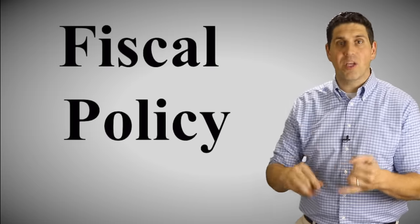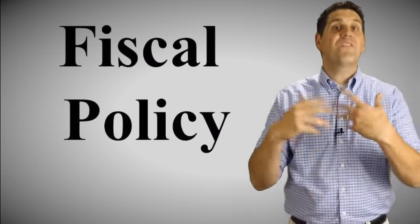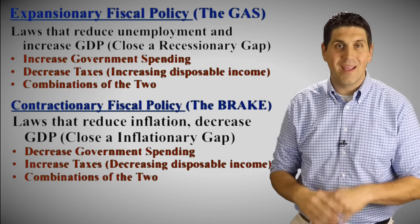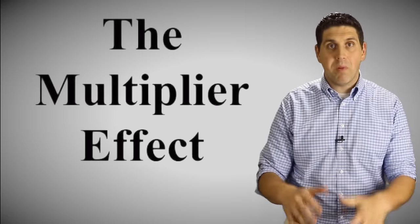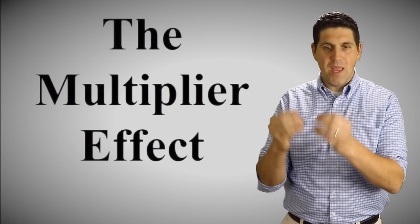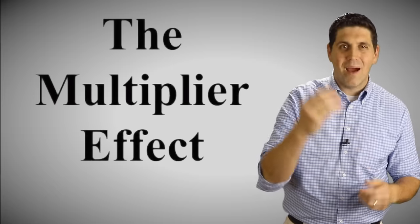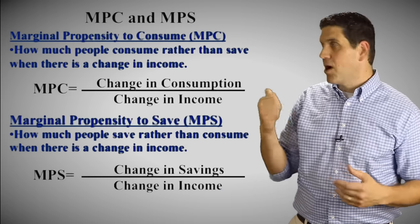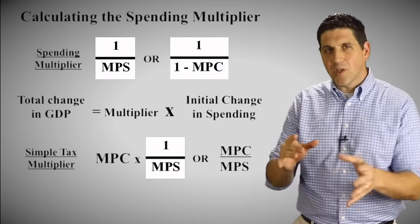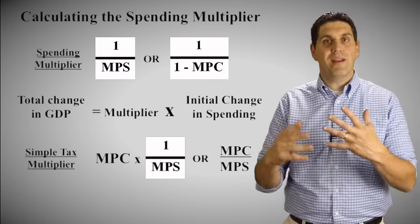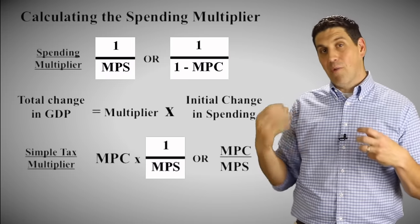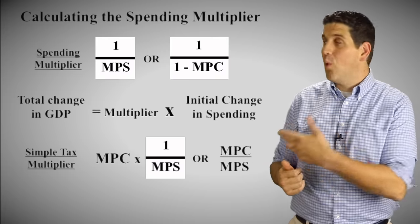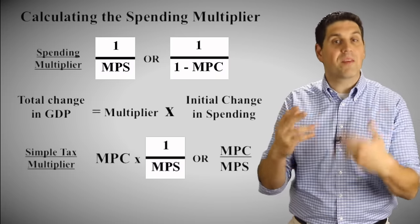The next concept in this unit is fiscal policy: the change in government spending and taxes. When the economy is doing poorly, expansionary fiscal policy means increasing government spending or cutting taxes. Contractionary fiscal policy means increasing taxes or decreasing government spending. One of the last concepts is the spending multiplier: when people spend, that becomes somebody else's income; people save a portion and spend the rest, which becomes somebody else's income, and this keeps happening over and over. You need to understand marginal propensity to consume — how much people consume of new income — and marginal propensity to save. The simple spending multiplier is 1 divided by the marginal propensity to save. There's also a tax multiplier, which is one less than the spending multiplier.